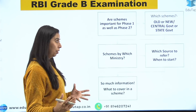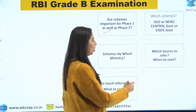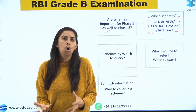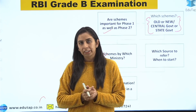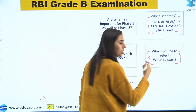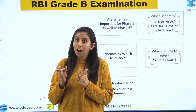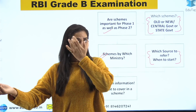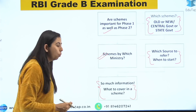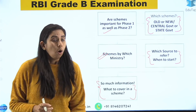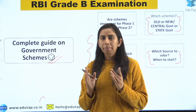Let's see what we're going to cover in this session. Are schemes important for Phase 1 as well as Phase 2? Which schemes to cover — old or new, central government or state government? This is a pain point for many students who are not sure which scheme to leave and which to cover. Schemes by which ministries — a lot of students have been asking for a list of ministries. Which source to refer? There are many sources for government schemes, but none specifically oriented towards RBI examinations. There might be many sources for UPSC, but not easily found for RBI. Also, a particular scheme has so much information — what to cover from it?